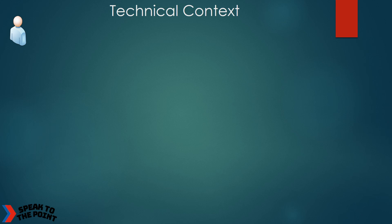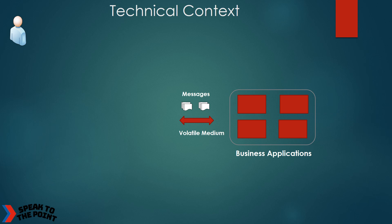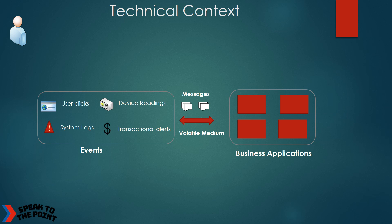Hello. My name is Brian. I'm a solution architect at organization XYZ. We have several business applications in our enterprise landscape. These applications keep generating messages at various events like web clicks, device readings, transaction alerts, and system logs. The messages generated during these events have a very short lifetime, which means that if these messages are not consumed immediately, they will never be available to the downstream applications. I need to build a solution that makes this data available for the downstream applications when they need it.